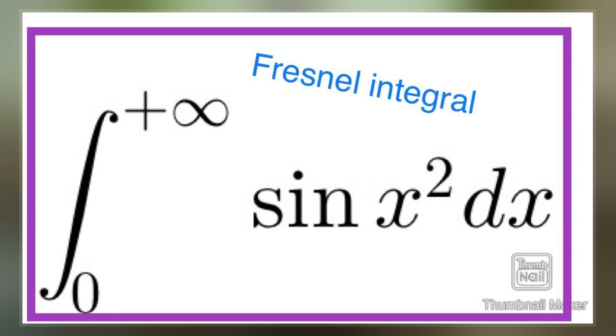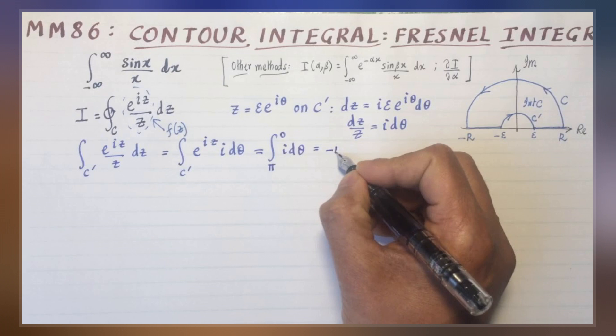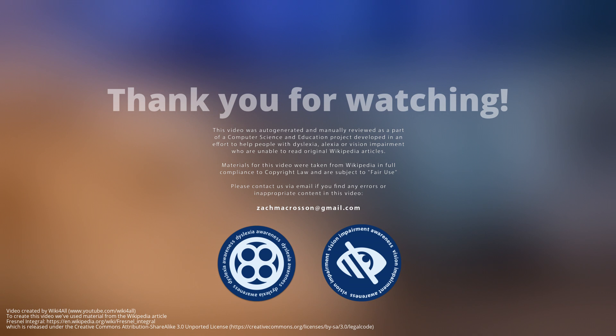From the definitions of Fresnel integrals, the infinitesimals dX and dY are thus defined. Thus the length of the spiral measured from the origin can be expressed accordingly. That is, the parameter t is the curve length measured from the origin and the Euler spiral has infinite length.